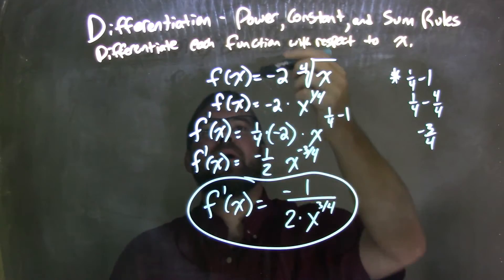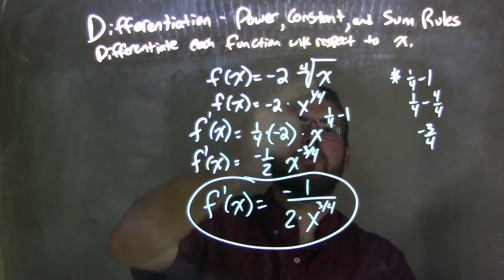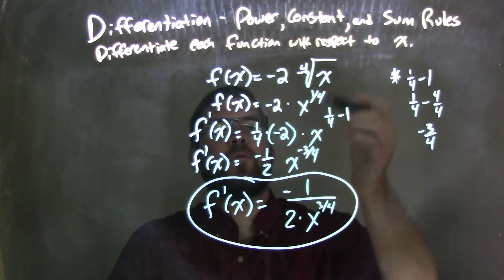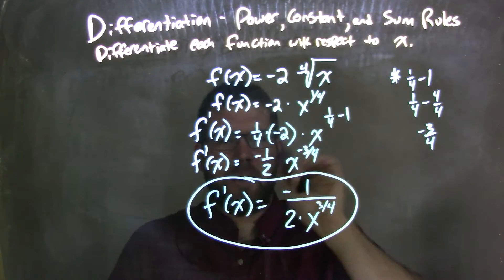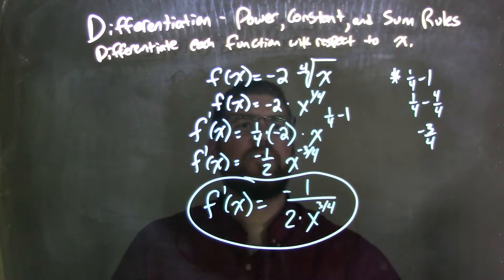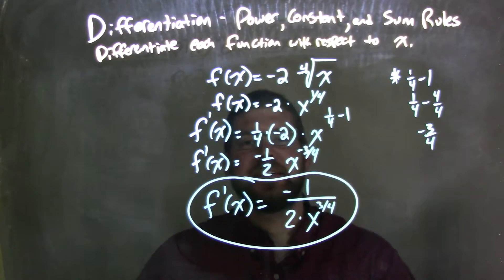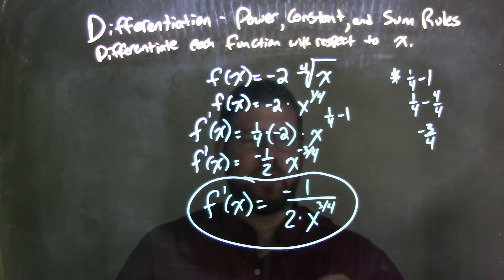So let's recap here. We're going to f of x is equal to negative 2 times fourth root of x. So I rewrote this, the fourth root of x to be x to the one-fourth power, because I prefer dealing with fractions and exponents instead of radicals.